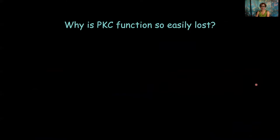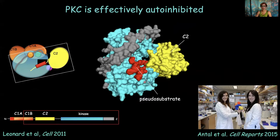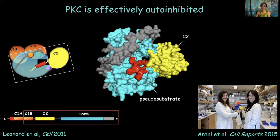So why is PKC function so easily lost? This comes back to the idea that it needs to be very tightly auto-inhibited, and when it's auto-inhibited, it's stable. If we make any mutations that disrupt these auto-inhibitory contacts, we have a constitutively active PKC that's very unstable and sensitive to degradation. The structure of PKC-beta was solved by Hurley and coworkers about 10 years ago. We looked at the crystal packing and found that the kinase domain is inhibited not only by the pseudosubstrate occupying the substrate binding cavity, but by having the C2 domain clamp on top to really hold that pseudosubstrate in place — requiring many things to happen before the enzyme can be liberated.